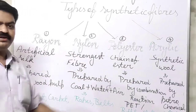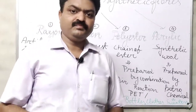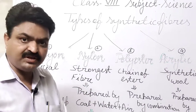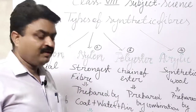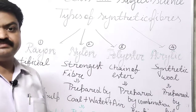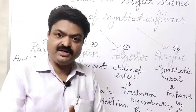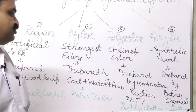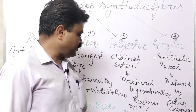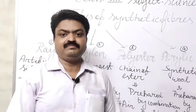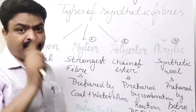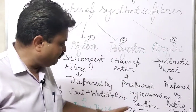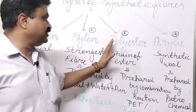The next important synthetic fiber is polyester. 'Poly' means long chain, 'ester' means one chemical substance — so the chain of esters is known as polyester. It is prepared by chemical reactions when esters are combined together in the form of a chain. With the help of polyester, mainly two types of products are prepared: PET (polyethylene terephthalate) and terylene.